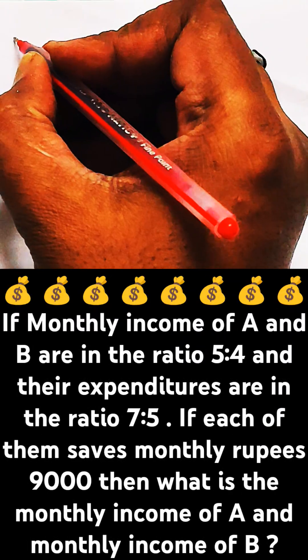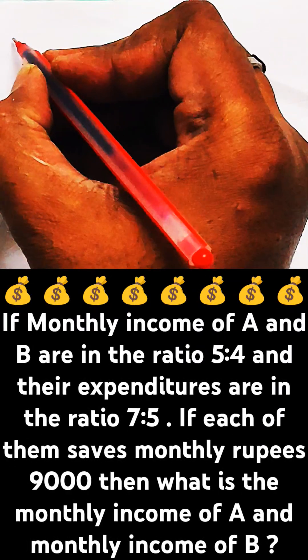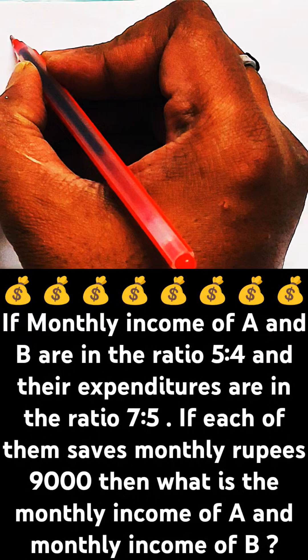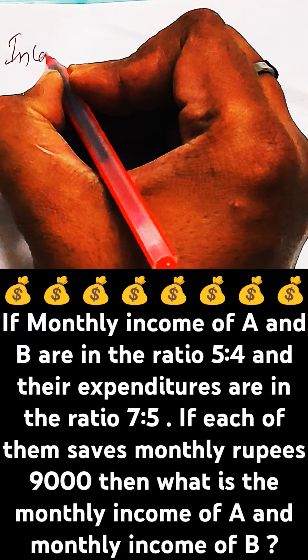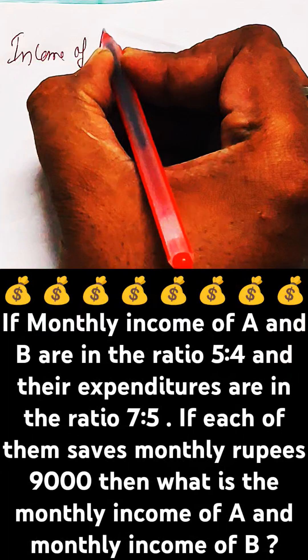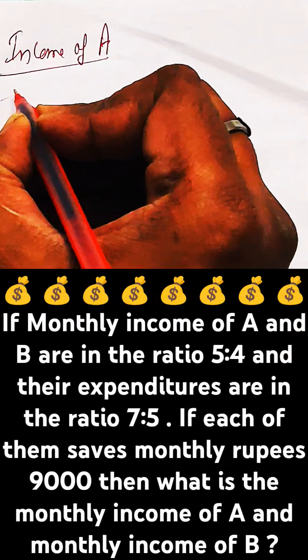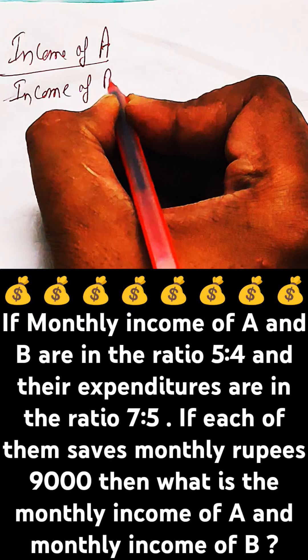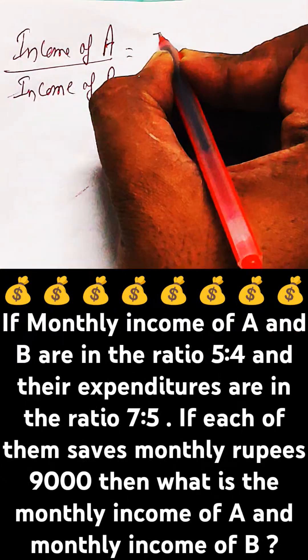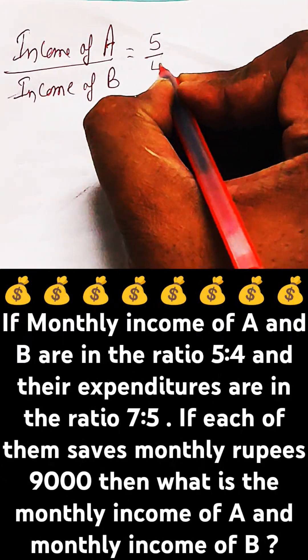It's given that two persons A and B are having a monthly income. The ratio of income of A to income of B is given as 5 by 4, or 5 is to 4.